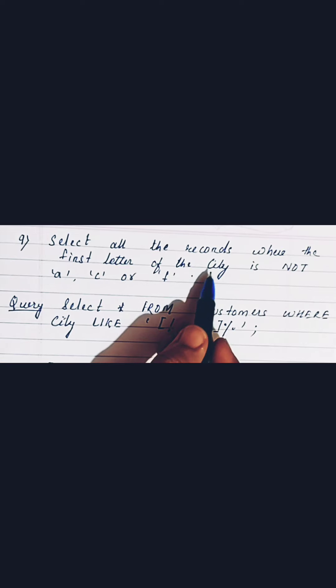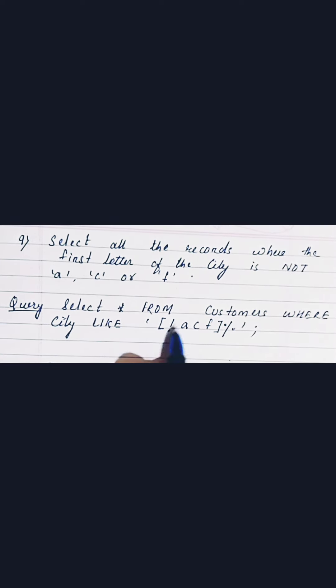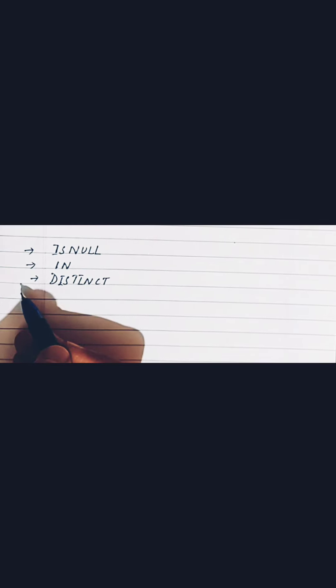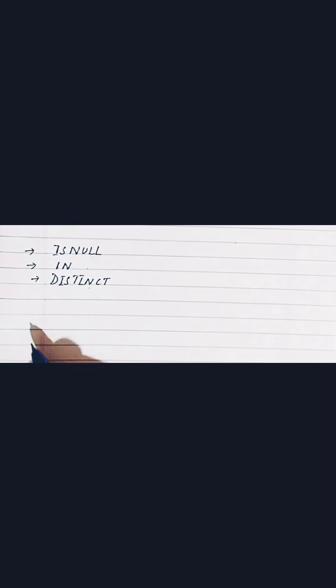Moving to the last question: select all the records where the first letter of the city is NOT 'A', 'C', or 'F'. If it were those letters we would write '[ACF]%', but since it is negated we use the not symbol before the square bracket. I hope you are clear about the LIKE clause and when to use the percent sign versus the underscore. The remaining special operators — IS NULL, IN, and DISTINCT — will be covered in the next video. If you liked this video, please subscribe to Placement Prep. Thank you and have a good day.